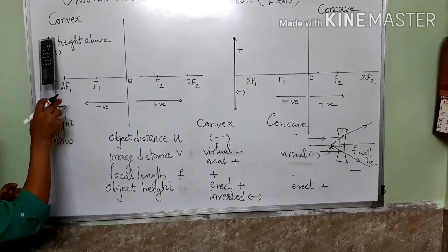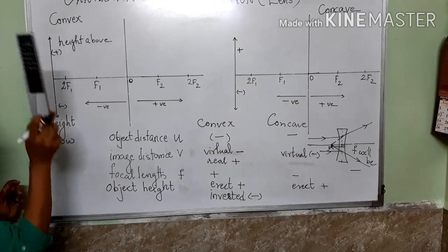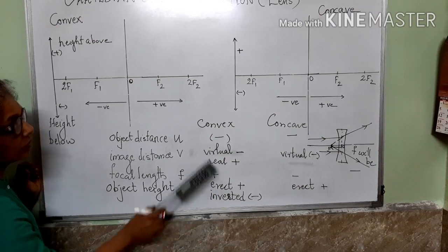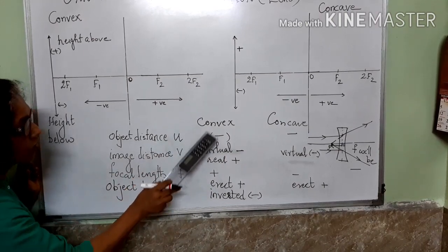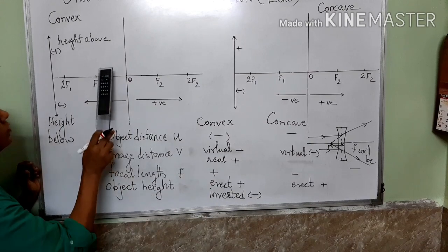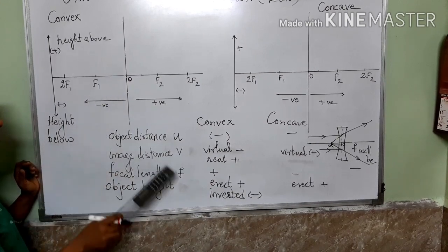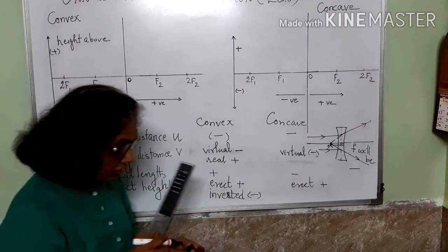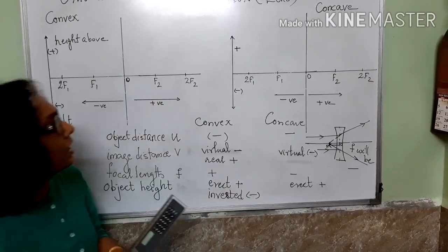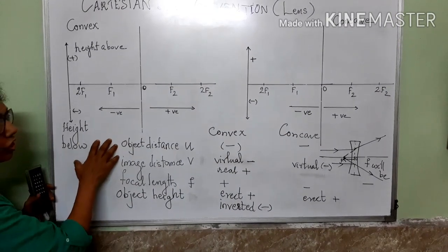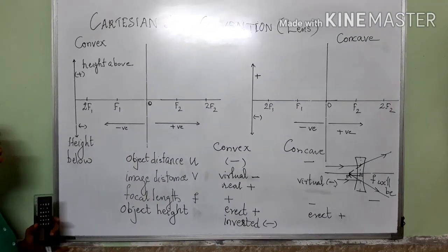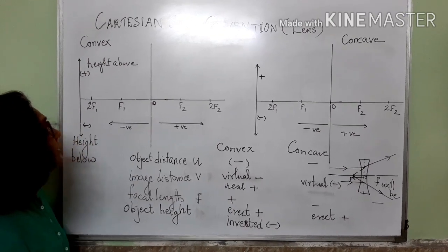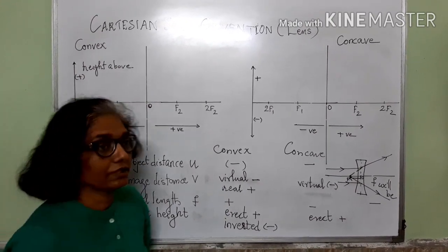Height of the object is positive as it is above the principal axis. Height of the image depends on whether it is erect or inverted — if the image is inverted, it is below the principal axis, so height is negative; if the image is erect, height is positive. You need to learn all these points, as drawing and explaining the Cartesian sign conventions for lenses is a commonly asked exam question. Thank you.